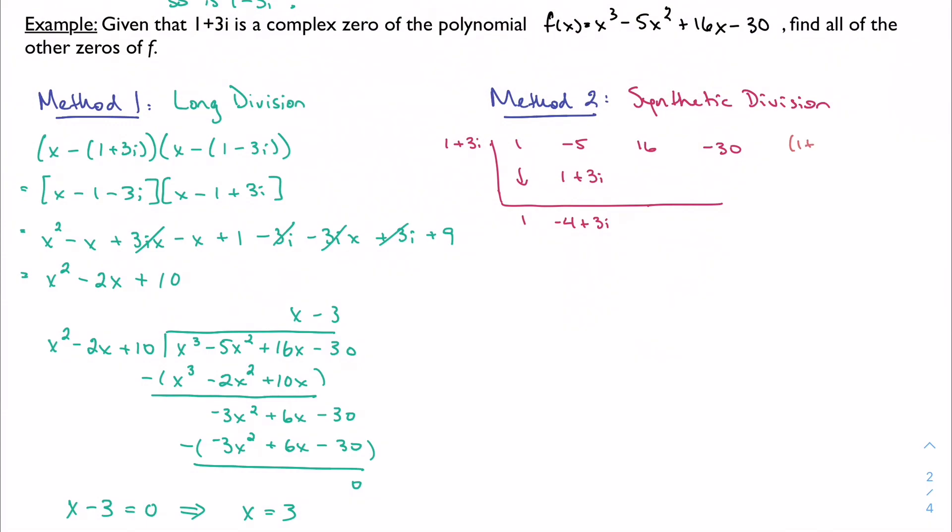So I'm going to add, I'm going to get negative 4 plus 3i, and I'm going to multiply. And I am going to do my multiplication off in the margin as best as I can here. So I'm just going to slide this over. So I want to do (1+3i) times (negative 4+3i).